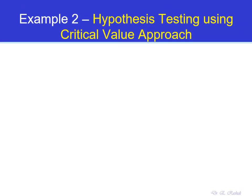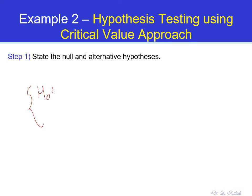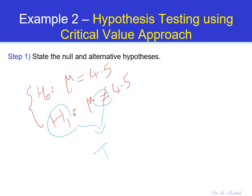Let's go through all the steps of hypothesis testing for this example. The first step is to state the null and alternative hypotheses. The null hypothesis states the status quo: the average waiting time is still 4.5 minutes, so mu equals 4.5. The alternative hypothesis opposes this and says the average waiting time is not equal to 4.5 minutes — it has changed. Because we have an inequality in the alternative hypothesis, we are dealing with a two-tailed test.